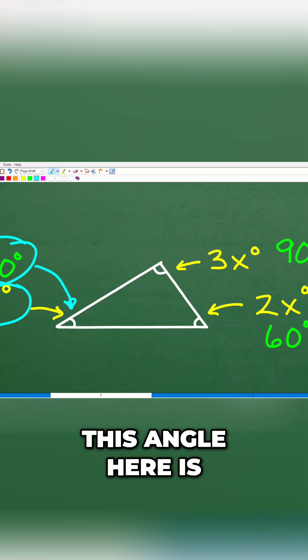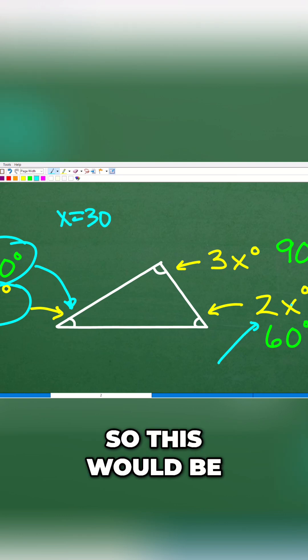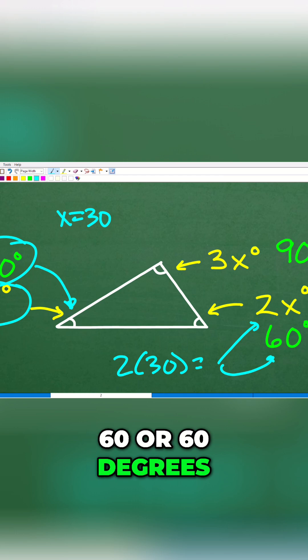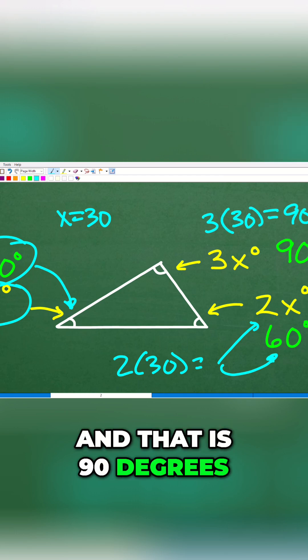But we need the other angles. So this would be 2x or 2 times 30, which of course is 60 or 60 degrees. And over here we have to go 3 times 30, of course x is 30, and that is 90 degrees.